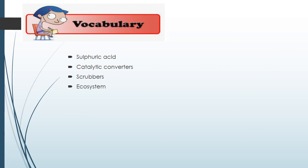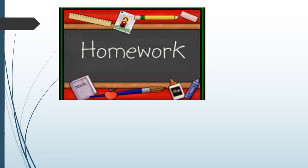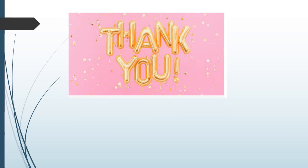In today's lesson you learned some new words. You are required to find the meanings. The words are: sulfuric acid, catalytic converter, scrubber, ecosystem. Watch this video again to better understand the topic. Solve the attached worksheet to test your understanding. That's all for today's lesson. Thank you and have a nice day.